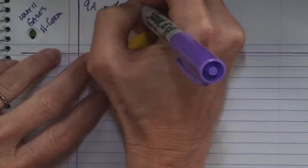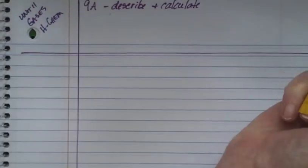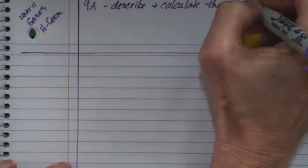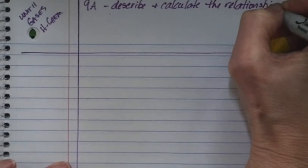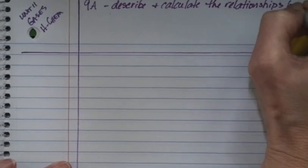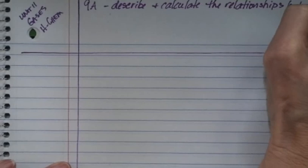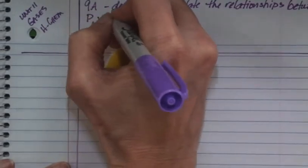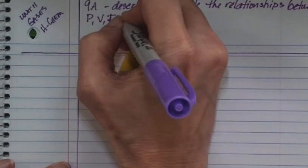TEKS 9A says describe and calculate. So here's where our calculations are going to start. Describe and calculate the relationships between pressure, volume, temperature, and number of moles. N is number of moles.